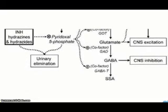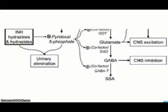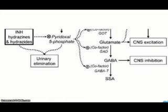Isoniazid interferes with the synthesis and metabolism of GABA, the primary inhibitory neurotransmitter in the CNS. Two pyridoxine-dependent enzymes control GABA metabolism: glutamic acid decarboxylase and GABA aminotransferase. The former catalyzes GABA synthesis, while the latter degrades the neurotransmitter. The inhibitory effects are greater on the GAD, which leads to decreased GABA concentrations. Depletion of GABA is thought to be the etiology of INH-induced seizures.